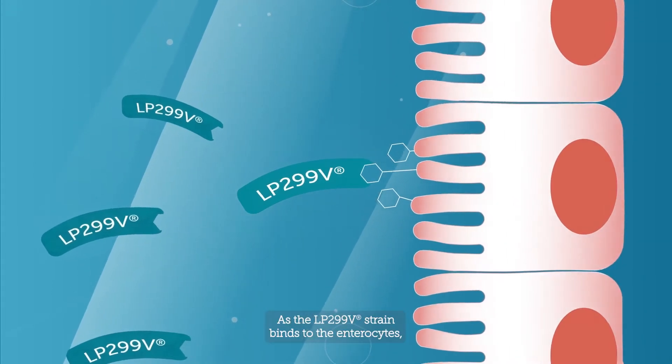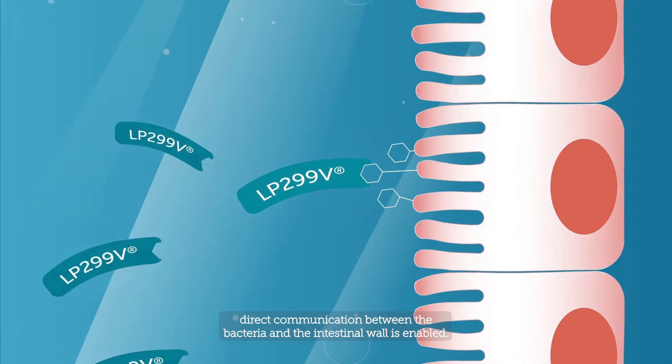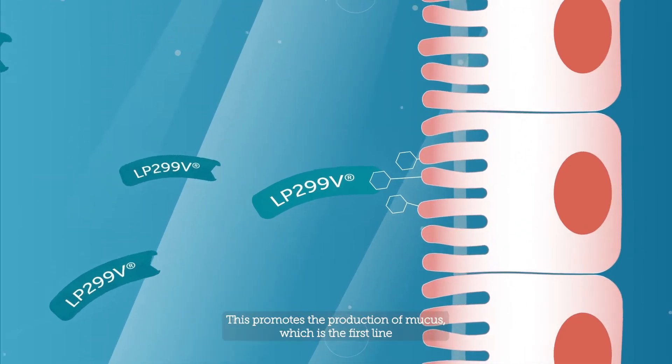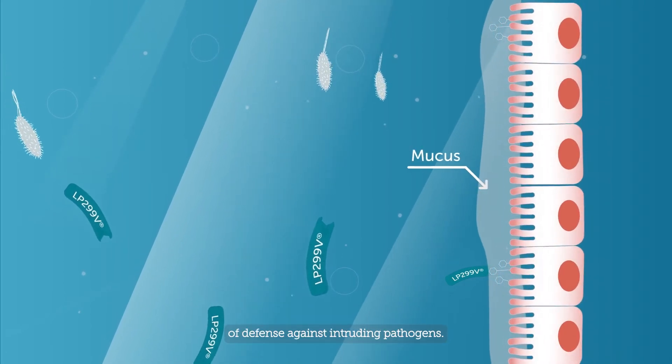As the LP299V strain binds to the enterocytes, direct communication between the bacteria and the intestinal wall is enabled. This promotes the production of mucus, which is the first line of defense against intruding pathogens.